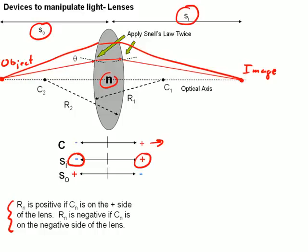To the opposite, our objects, SO, that distance is positive in this case because our object is to the left side of the lens. It's possible to have an object over on the right side of the lens, but in that case, the object distance SO would be negative.